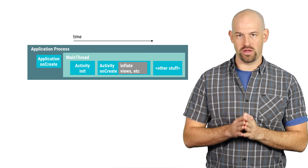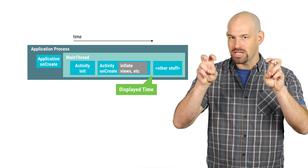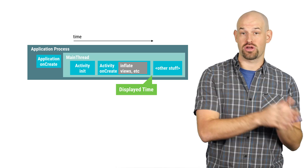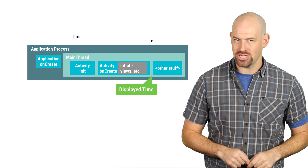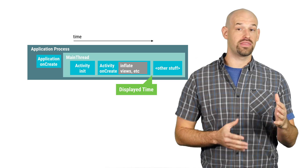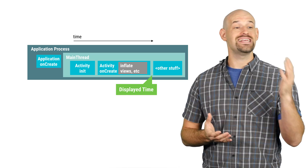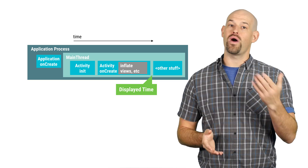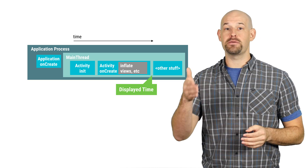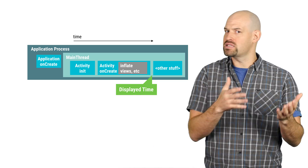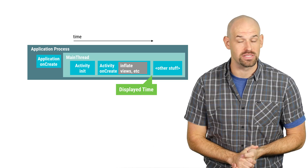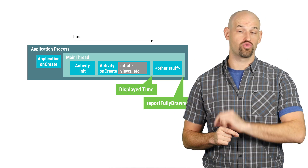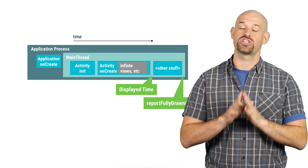Second is the ReportFullyDrawn function. The displayed metric reported in LogCat is useful for most situations where you'd like to track down the time it takes to go from application start to first visible. However, in modern application development, there's often a great deal of lazy loading — that is, rather than blocking the initial drawing of the window, asynchronously loading resources and views in the background and updating the view hierarchy accordingly. The result is that while the initial activity may be visible, it may not yet be fully loaded with respect to resources, which could be considered a separate metric when evaluating launch time performance. To address this concern, you can manually call the activity.reportFullyDrawn function to let the system know that your activity is finished with its lazy loading.